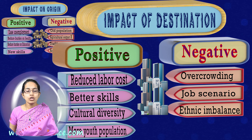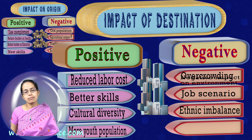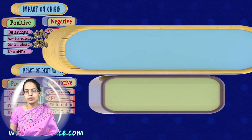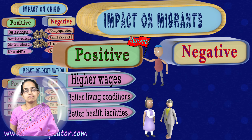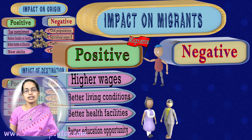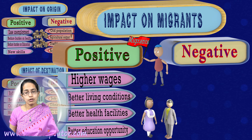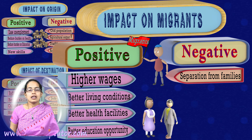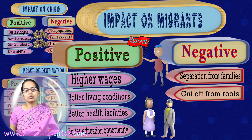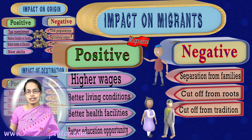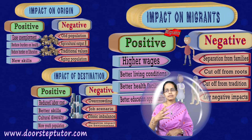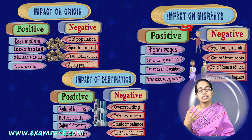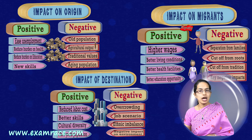There would also be loss of cultural and traditional values at the destination, with negative impact on the environment. From the migrant's perspective, he seeks higher wages, better living conditions, better health facilities, better educational opportunities, and more choices. However, negatives include moving alone and leaving family behind, being cut off from roots and traditions, cultural linkages slowly lost, and difficulty assimilating to a new environment and region.